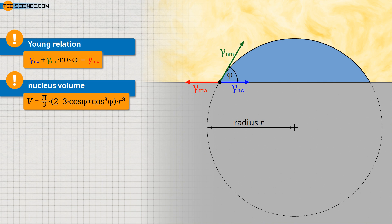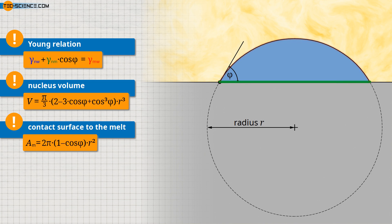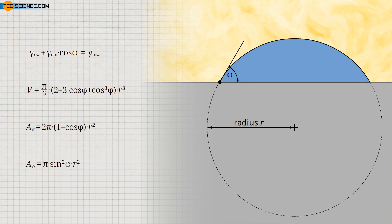From formula collections, one can also find the formula for determining the surface area of the spherical cap, which forms the boundary surface between the nucleus and the melt. The base area of the spherical cap toward the wall also depends on the contact angle and can be determined with the given formula. The geometry of the nucleus is thus completely determined by the nucleus radius and the contact angle, whereby the contact angle, according to the Young equation, depends only on the surface tensions. These formulas will be needed later.